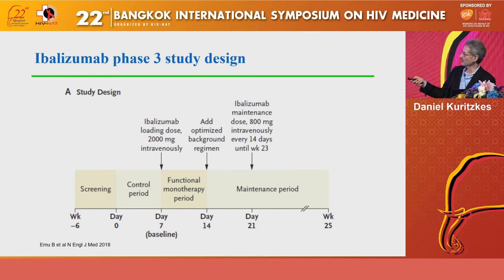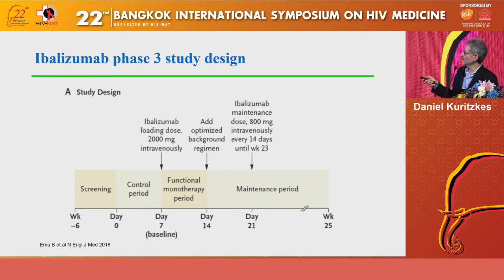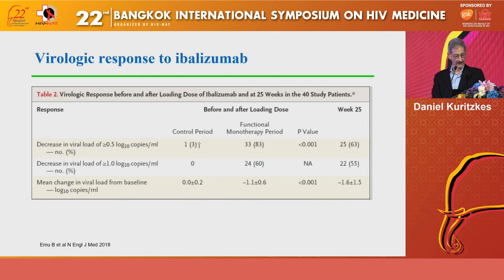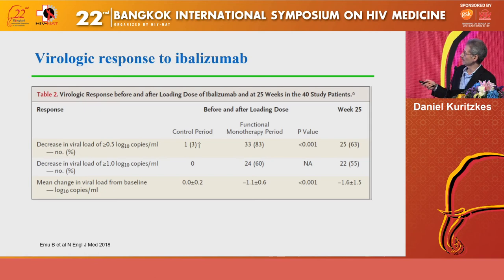After day 14, participants could optimize their background regimens, and were followed for additional time for safety while receiving 800 mg IV doses every two weeks. Only a single individual in the control period had a decline in virus load of half a log or greater, whereas during the monotherapy period 33 of 40 participants had such a decrease, 24 achieved a one log decrease, with the mean change in virus load being just over one log — highly significant.